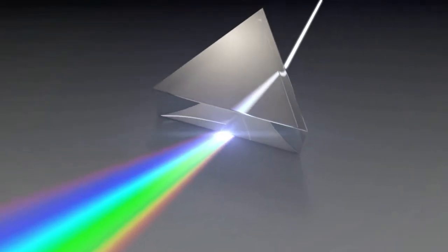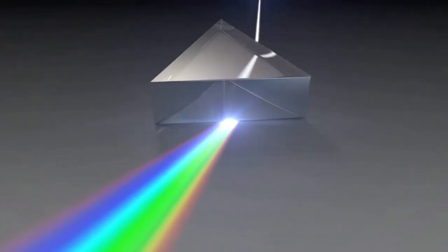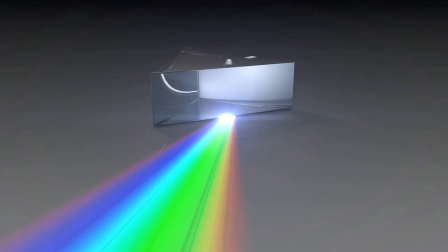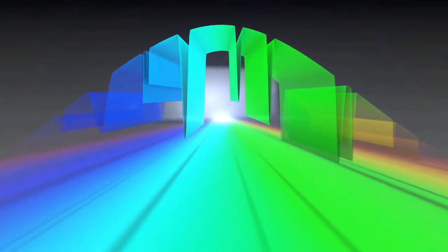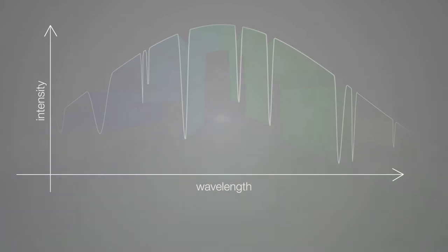Any object that absorbs or emits light can be studied with a spectrograph to determine characteristics such as its temperature, density, chemical composition, and velocity.